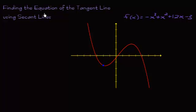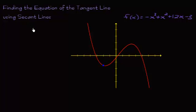In this video we're going to find the equation of a tangent line using secant lines. If you're not sure what I mean by secant lines, I do have a video called Tangent Lines, What Are They? on the website. We're going to use secant lines to find the equation of a tangent line. Once you learn the derivative, you won't have to go through all this — but hopefully understanding how we find the slope of a tangent line using secant lines will make the derivative less confusing.